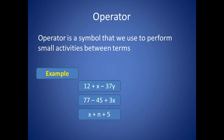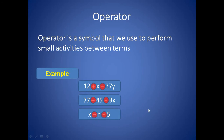Operator — an operator is a symbol that we use to perform operations between terms. For example, addition is an operator and multiplication is an operator. And in this expression, subtraction is an operator and addition is an operator. And in this expression, these two additions are also called operators.